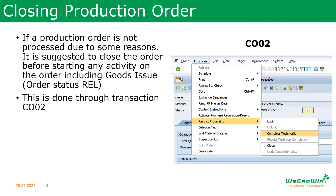First, we will talk about closing of the production orders. Due to some reasons — a machine breakdown, the requirement has changed, or a customer has cancelled the order — a production order which was created, released, and printed may not be executable. Because of this, we may need to close the order. If we don't close it, it will keep all the reservations, material capacities, and those things reserved. So, to close the order before we do any goods issue or other activity, we can close the order and remove it from other activities.